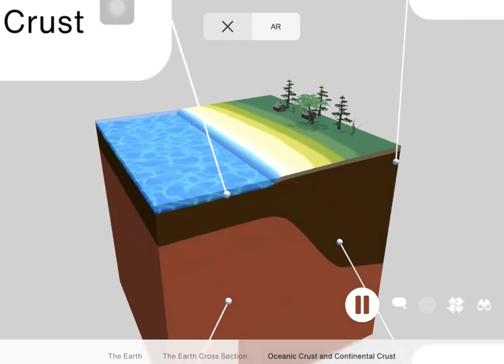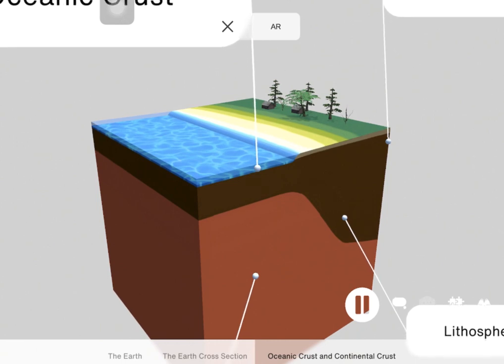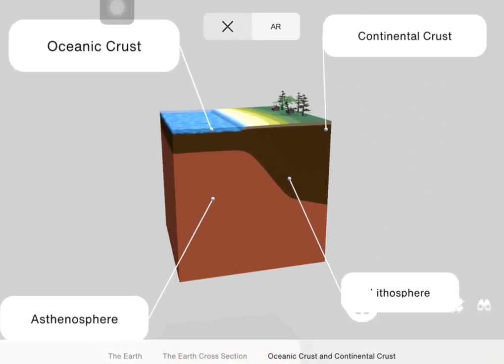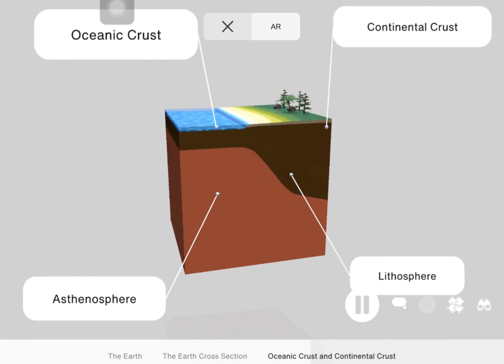Now this rock is rich in constituents like silicon, aluminum, and oxygen. The density of the continental crust is less as compared to the oceanic crust. It has an approximate value of 2.6 grams per cubic centimeter.